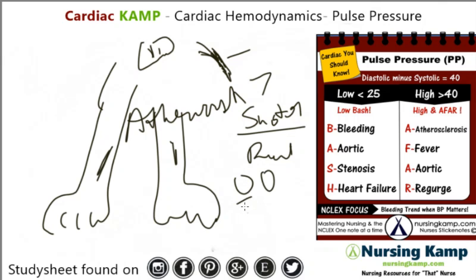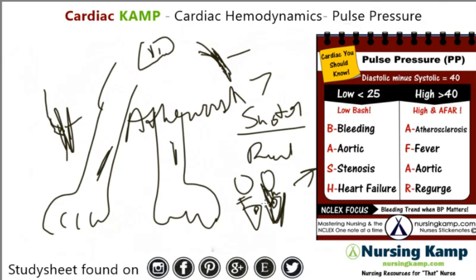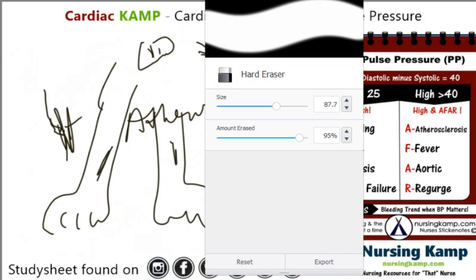Also, aortic regurgitation — so the aortic valve again. Previously we talked about stenosis where it's clamped down; with regurg, there's something wrong with the valve, it might be calcified and not fully closed, so blood swishes back and forth. This actually causes remodeling of the ventricle — mainly hypertrophy — where the muscle gets really thick. That's going to increase the pulse pressure. Also, fever causes vasodilation and increase of heart rate, which further widen pulse pressure.